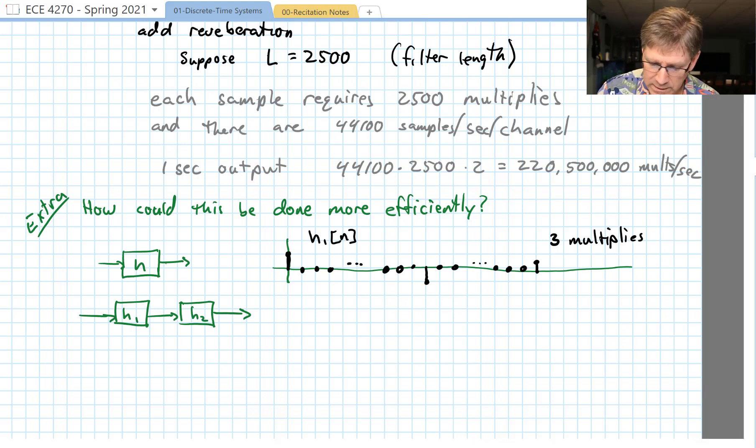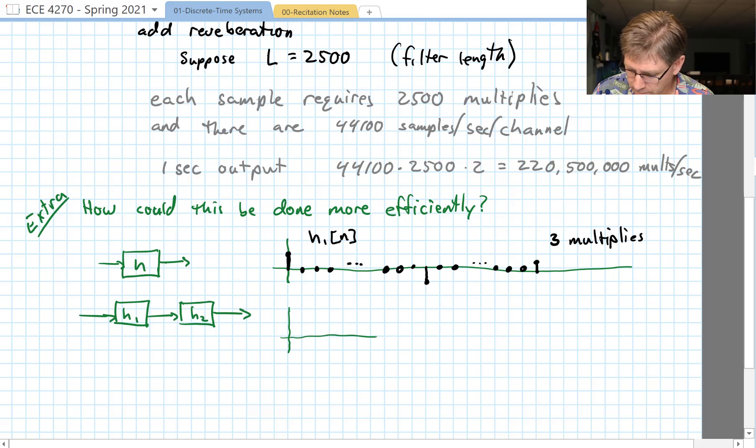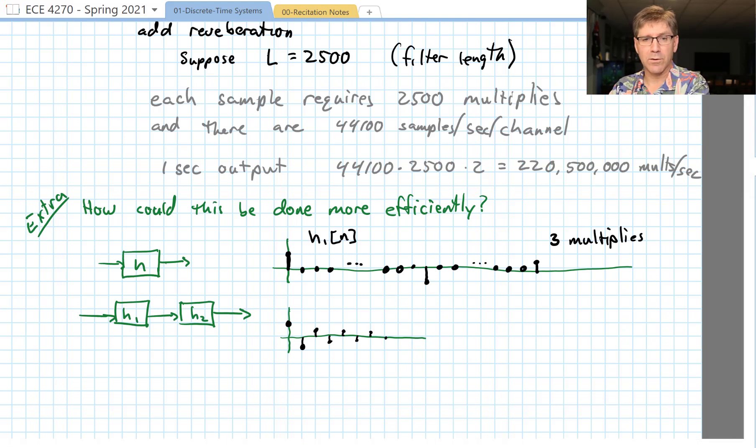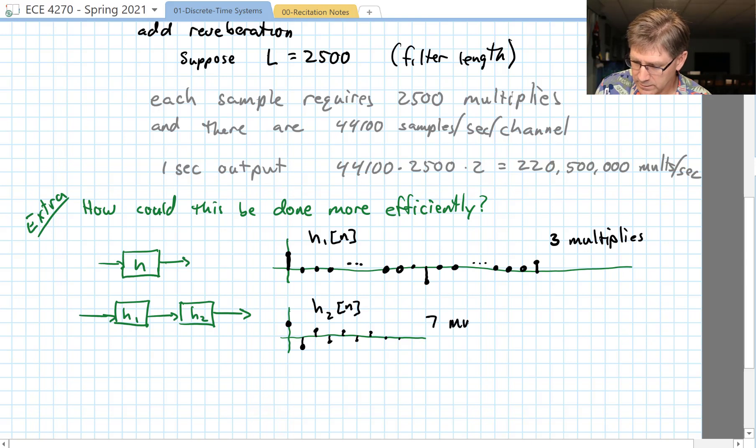Now what does H2 look like? Well H2 is going to be much shorter and H2 is going to look something like plus one minus... it's going to be decaying. You can do something like this with a simple IIR filter, it would take almost nothing, but we are going to ignore the IIR case and just do it as an FIR filter. One, two, three, four, five, six, seven, everything else is zero. So this is H2 and it takes seven multiplies.